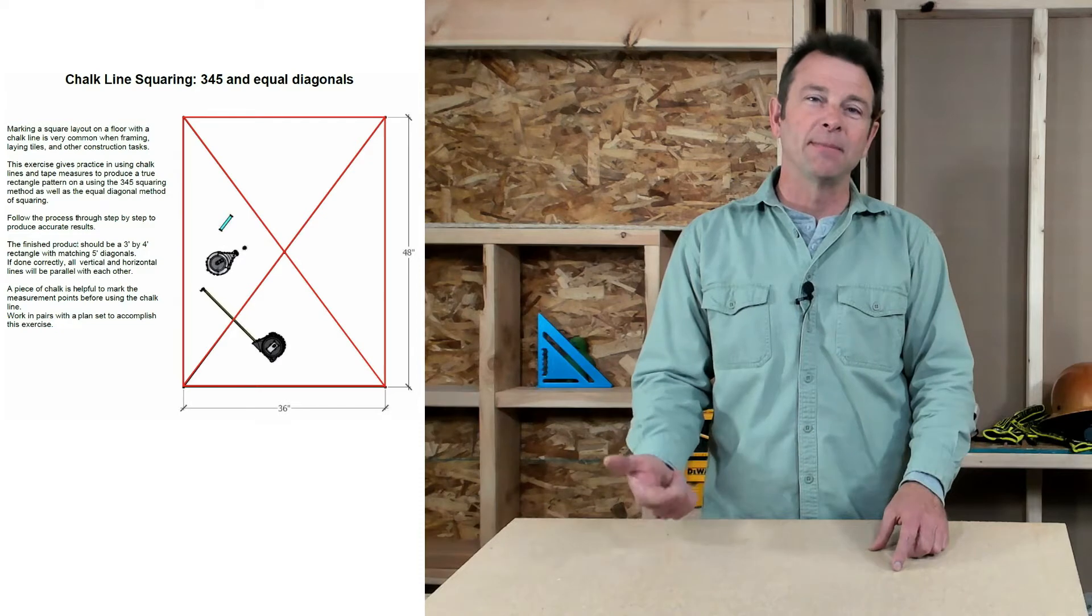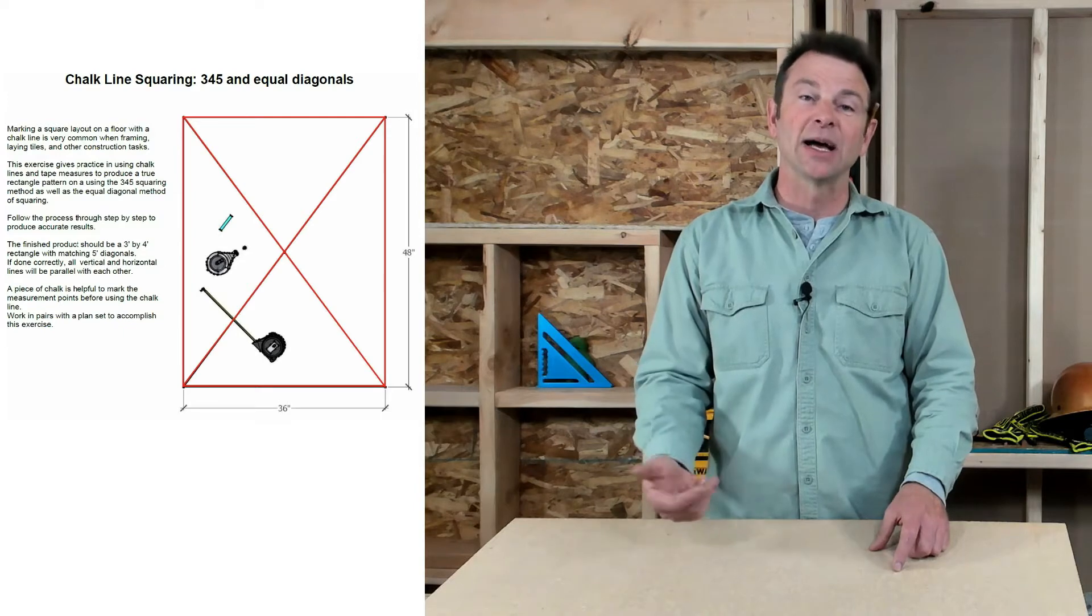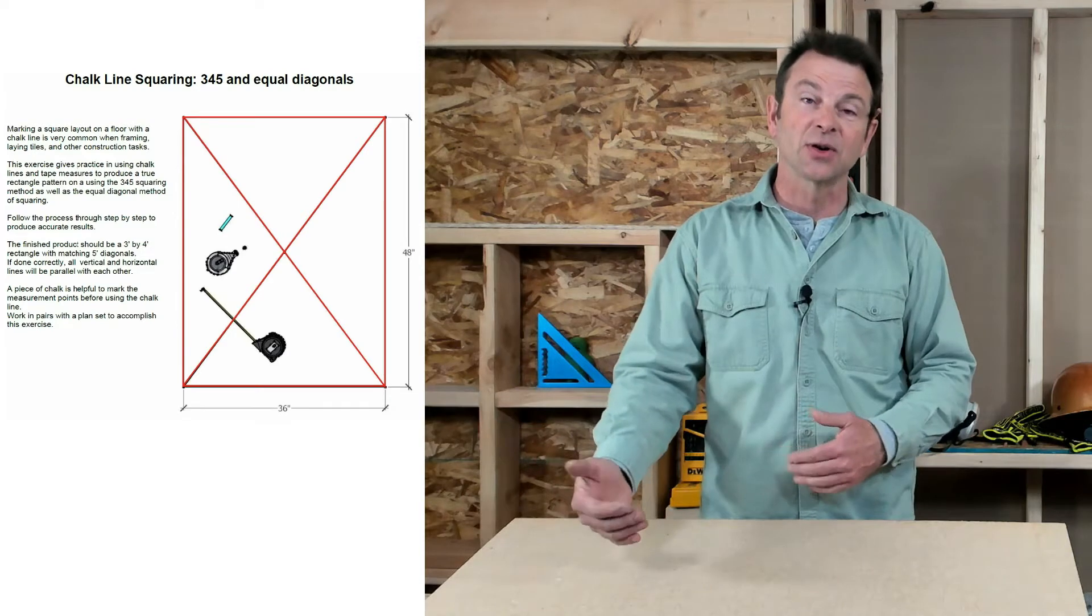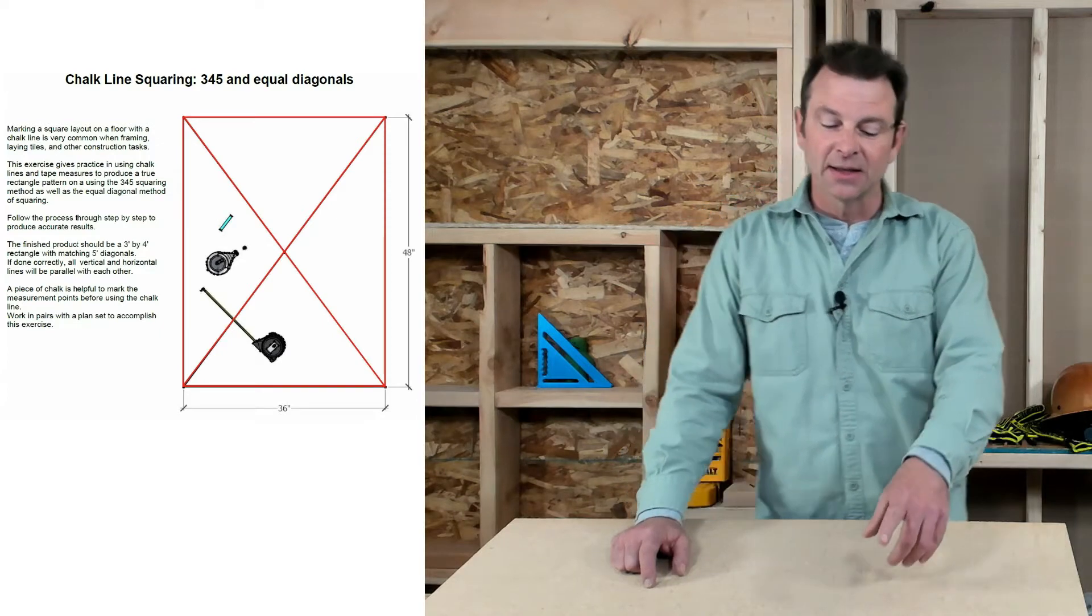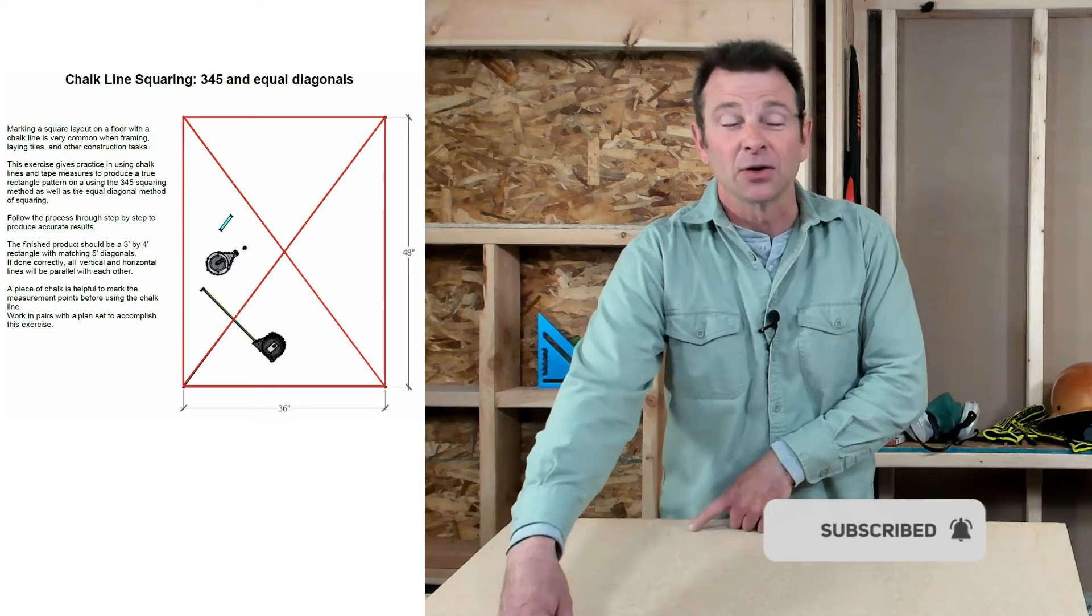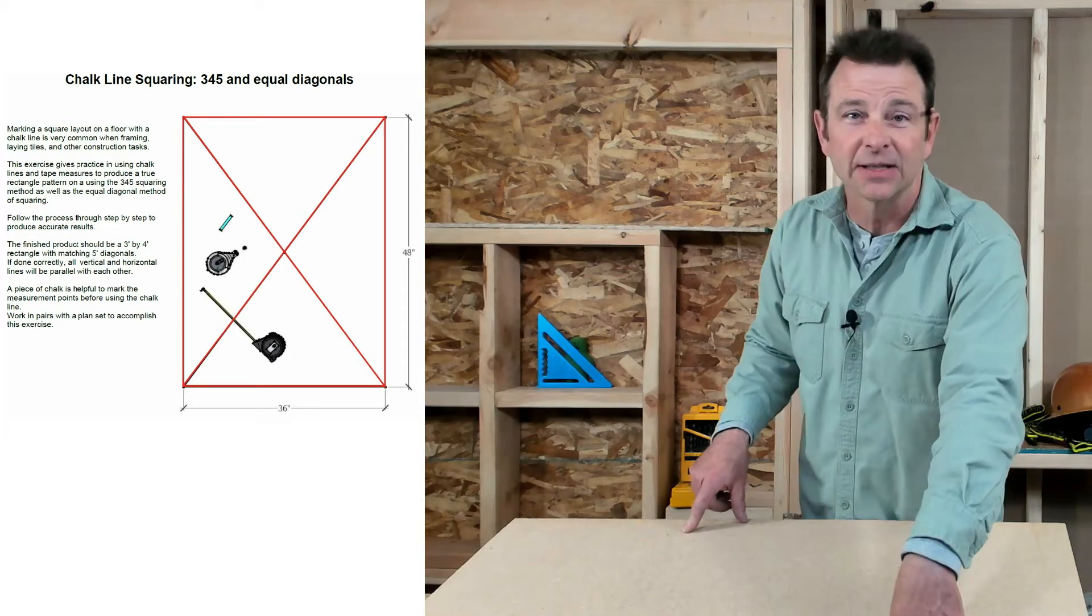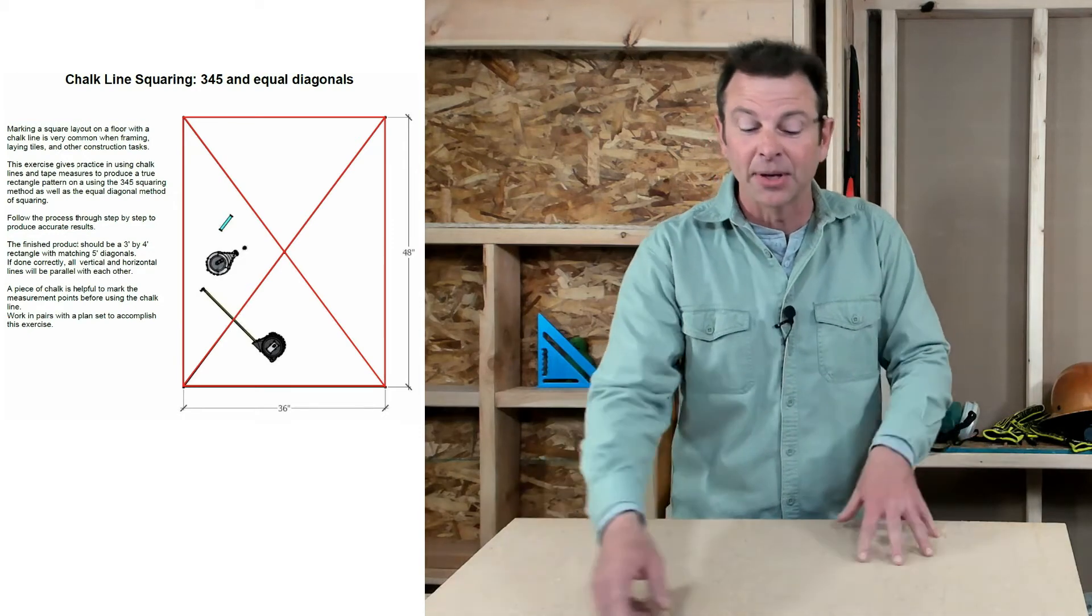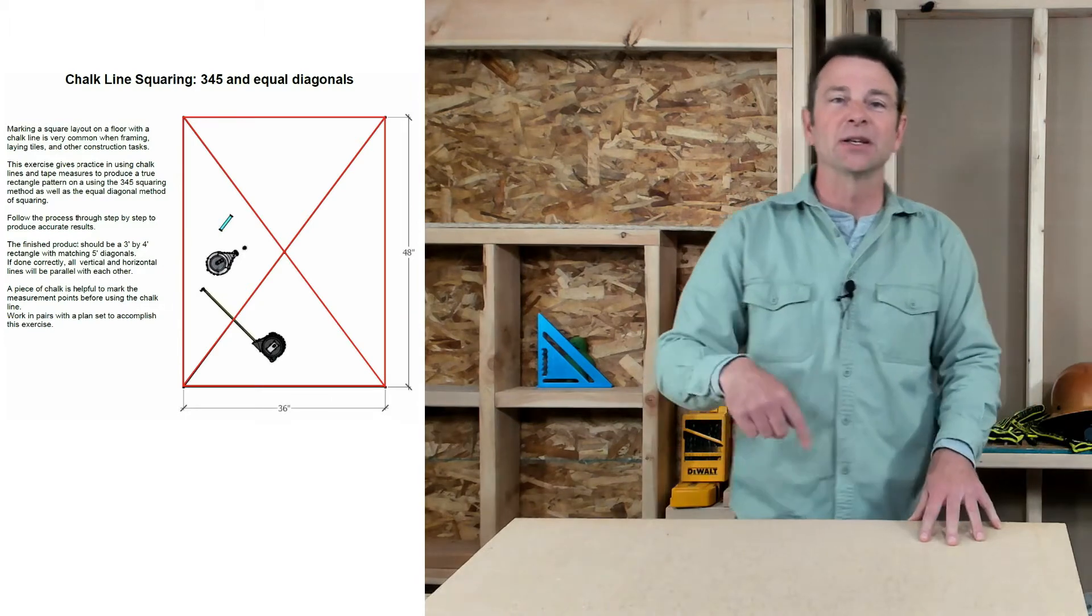I'm going to use a modified version of that. If you remember from our lesson, you can take 3-4-5 and multiply it times any number and then use those units to construct this triangle. I'm going to multiply by five. So my three side is going to be 15 inches, that's 3 times 5. My longer leg is going to be 4 times 5, that's 20 inches. And my hypotenuse is going to be 5 times 5, so that's 25. My rectangle will end up as 15 by 20 and my diagonals are going to be 25 inches.